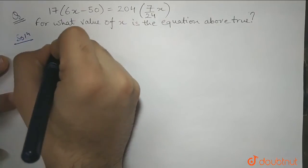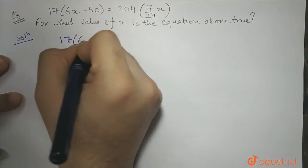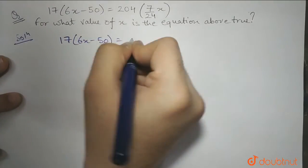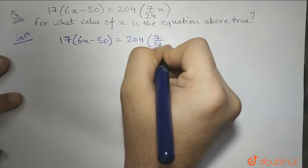solution. So yeah, 17 times 6x minus 50 equals 204, 7 by 24x.